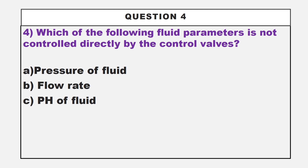This question may seem confusing. The right answer is option C, pH of fluid. Using a control valve, we can control the pressure of fluid and also the flow rate, but we cannot control the pH of a fluid. So the answer is option C, pH of fluid.